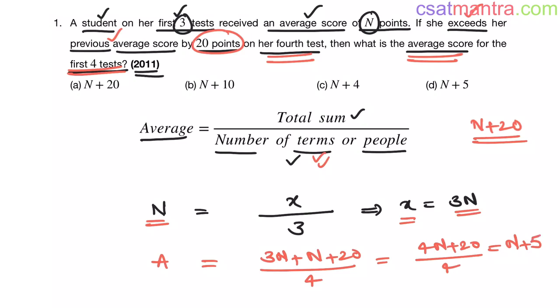There can be any number of questions from averages chapter my friends. All you have to stick to is this formula, the basic definition of average: total sum by number of terms or number of people. Here points obtained in first three tests is 3N. X equals 3N.